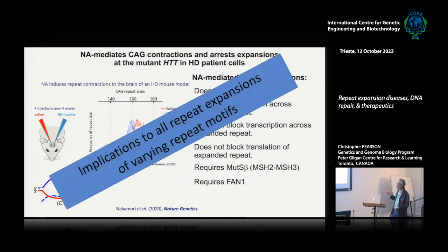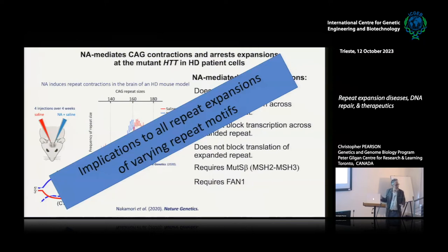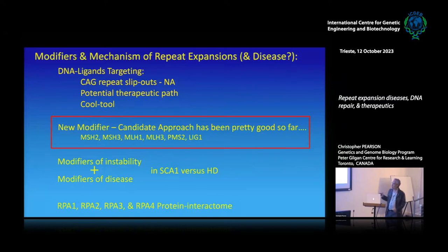This has implications for all repeat expansion diseases, which have different motifs. Each structure that forms could be unique to the sequence of the motif. We have compound NA for CAG repeats; targeting the G4C2 repeat for C9, GAA for Friedreich's ataxia, or the RFC1 repeat would require understanding what structures form at each expansion and identifying ligands that bind those — opening new concepts for different repeat expansion loci.